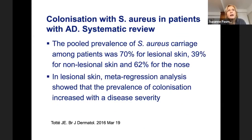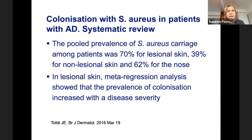This histology of lesional skin from a child with atopic dermatitis shows massive infiltration of inflammatory cells and disruption of the barrier. Due to inflammation you get spongiosis, and the scratching causes further disruption of the barrier at the surface. It is now proven that in people with atopic dermatitis there is an overgrowth of Staphylococcus aureus — seen in 70% of lesional skin, 40% of non-lesional skin, and even 60% on the nose — and more disease severity correlates with more overgrowth.